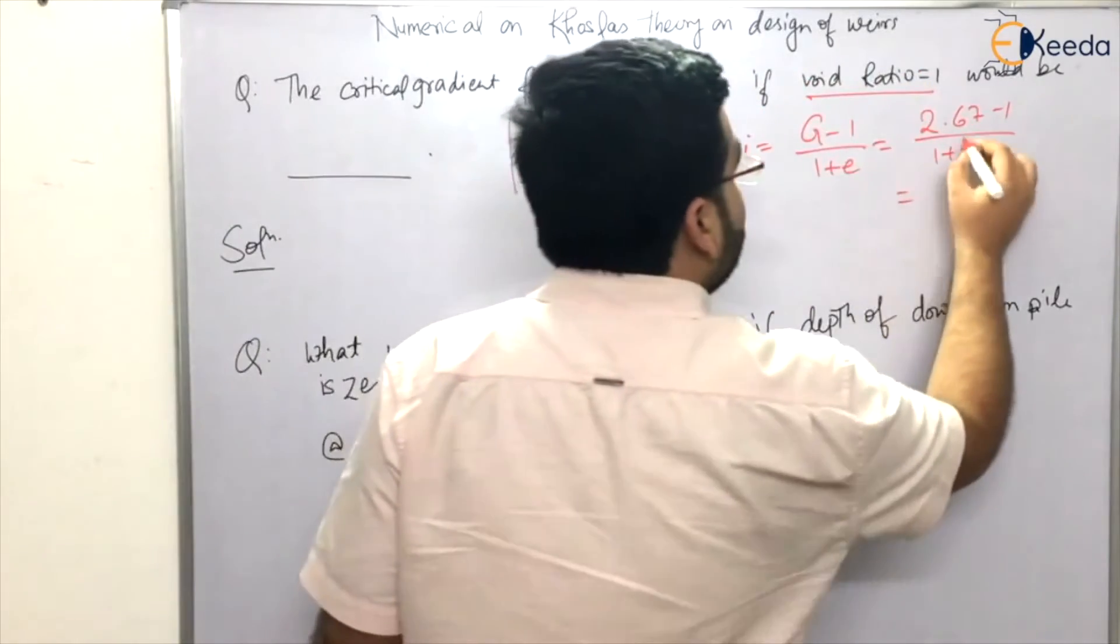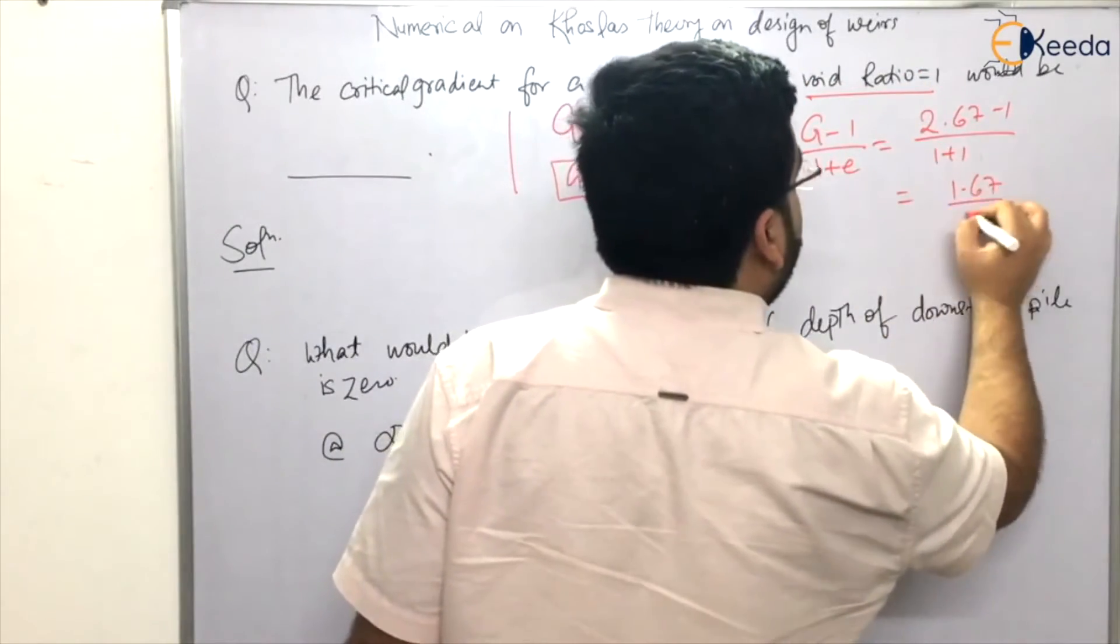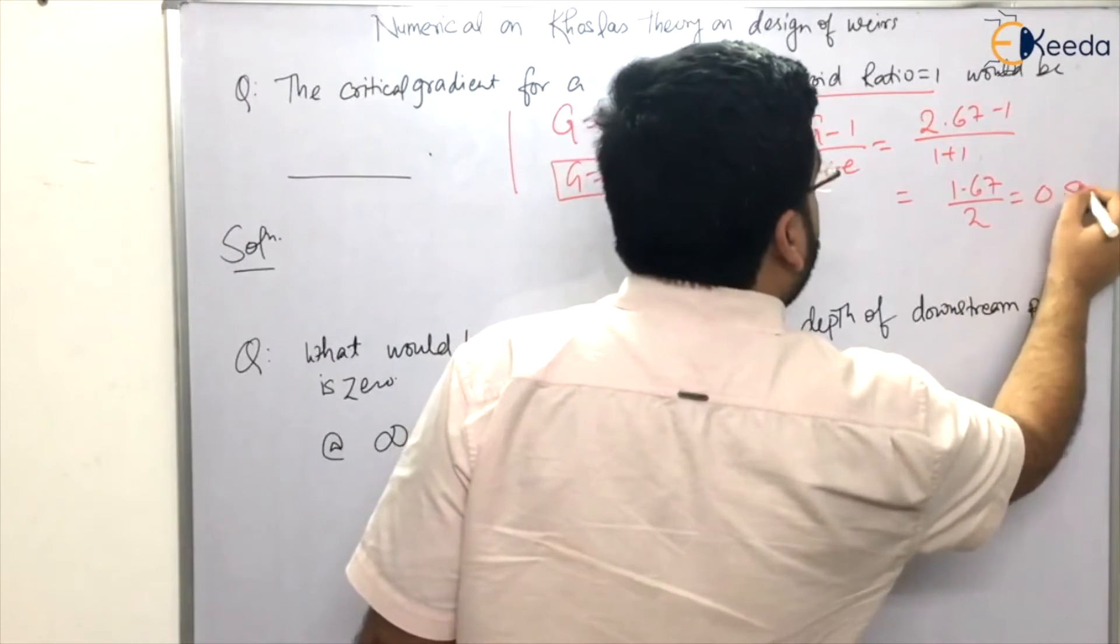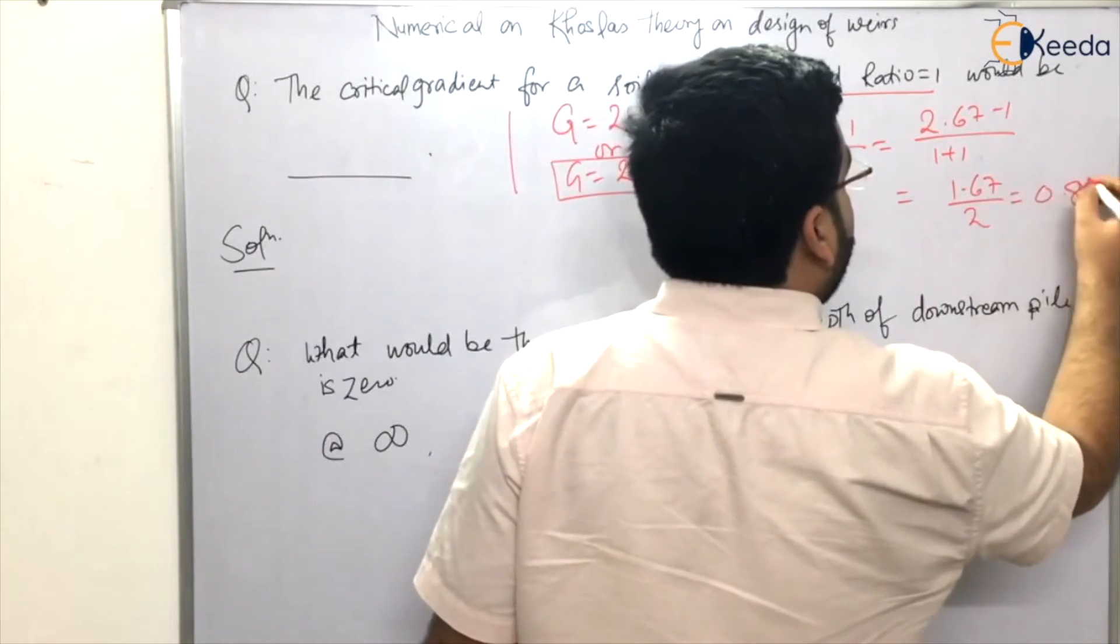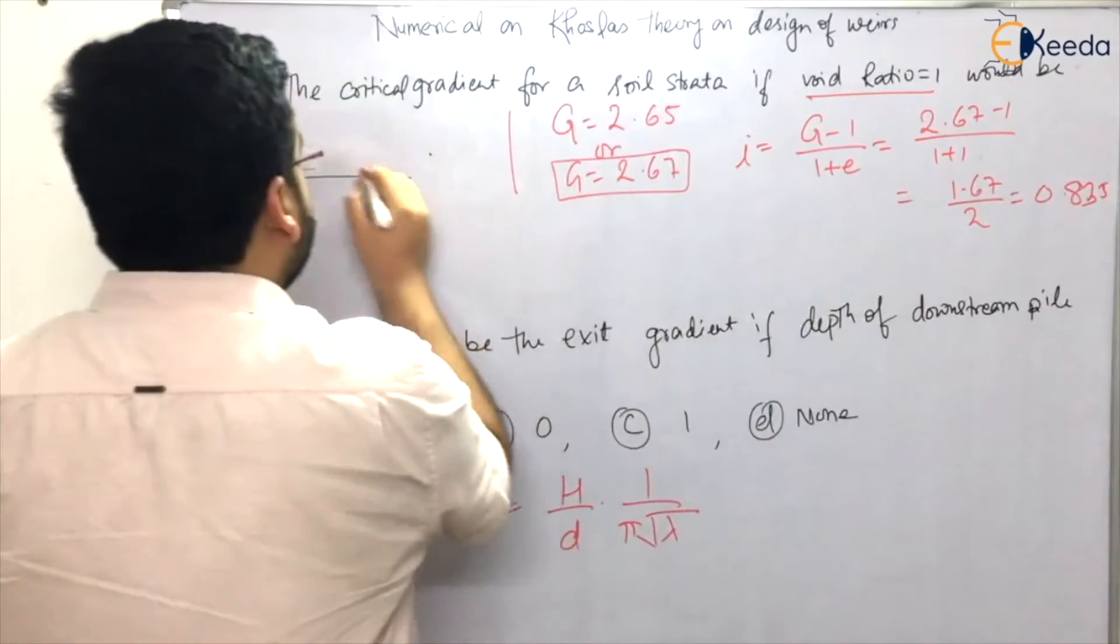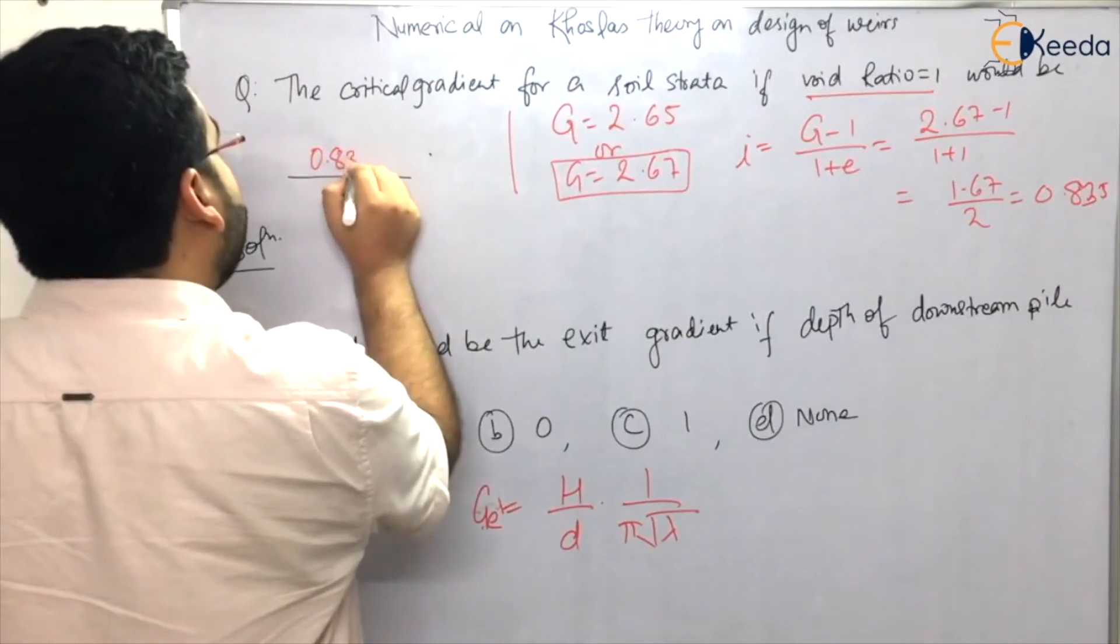So 1.67 divided by 2, that is 0.835. The correct answer would be 0.835.